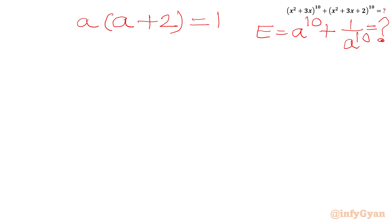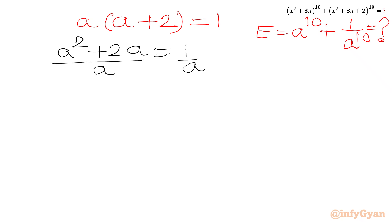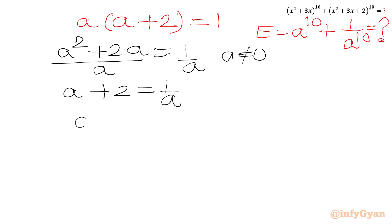Now I will multiply out a(a+2) = 1 to get a² + 2a = 1. Since a cannot be 0, we divide both sides by a to get a + 2 = 1/a. Rearranging, we get a - 1/a = -2.